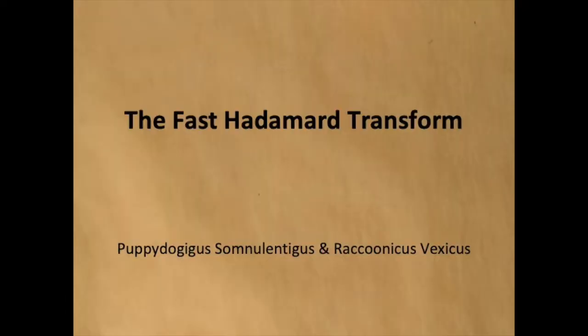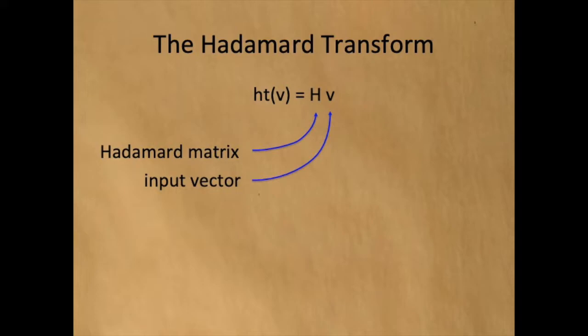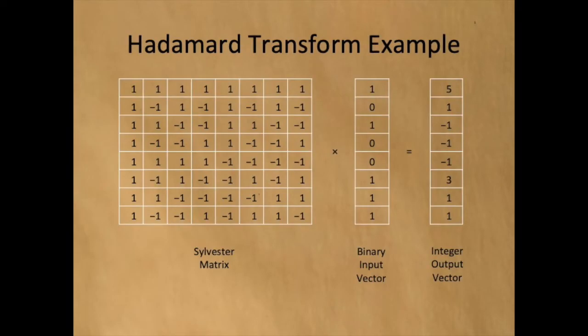This video concerns fast Hadamard transforms. A Hadamard transform simply multiplies a vector of input values by a Hadamard matrix. It is incredibly simple. This example shows multiplying a vector of binary values with a Sylvester matrix. Note that the input to the fast Hadamard transform could be of almost any type, as long as it has well-defined plus and minus operators.